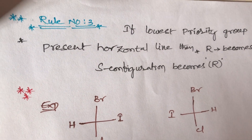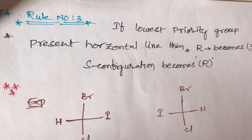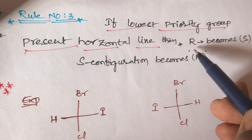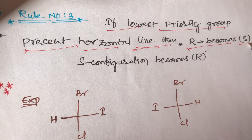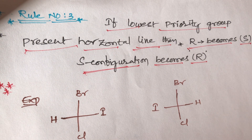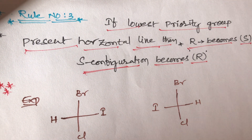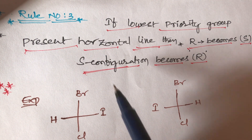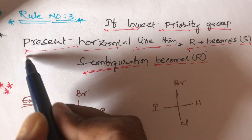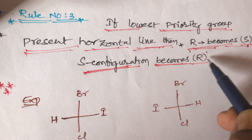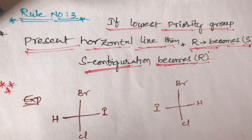Continuing the topic of RS configuration, this is Rule Number 3. If the lowest priority group is present on the horizontal line, then R configuration becomes S and S configuration becomes R. This is very important. Remember: the second rule states the least priority group should always be on the vertical line. If instead it is on the horizontal line, the configuration reverses.